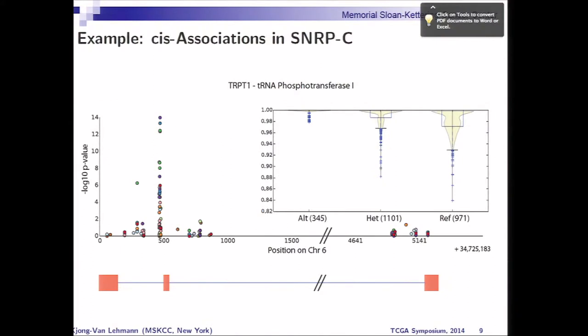Let me show you an example here. This is a cis association in SNRP-C, which generates a protein essential for the formation of the spliceosome — so this is why it's particularly interesting. On the bottom, you can see the gene structure with the three exons. This is the exon which is being skipped. You can see on the top right the different splice indices — how the inclusion of the exon goes down from the reference to the alternate allele. This is all the sample sizes we have in the TCGA data. And here on the left, you can see the p-values — the SNPs and their associated p-values; each color represents a cancer type. You can see a nice cis association right around the splice junction, which is associated with the change in exon usage.